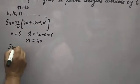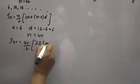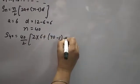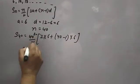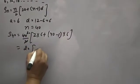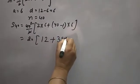So, S40 equals 40 over 2, times [2 times 6 plus (40 minus 1) times 6]. That gives us 20. 2 times 6 is 12. 40 minus 1 is 39. 39 times 6.